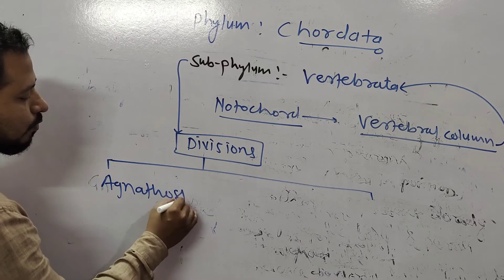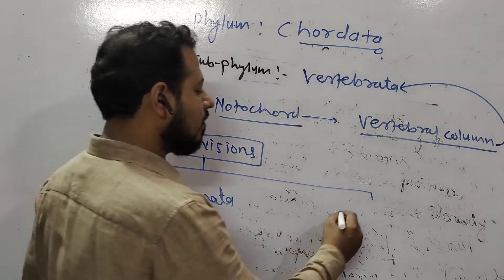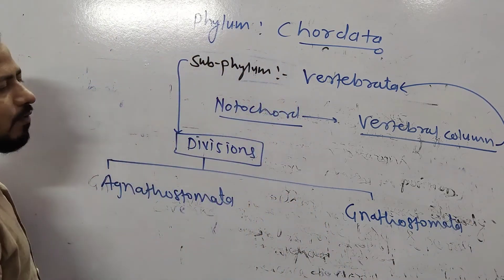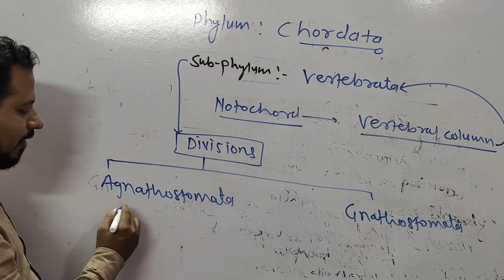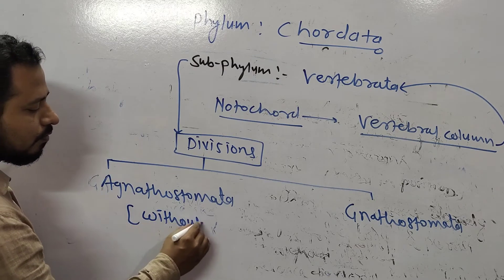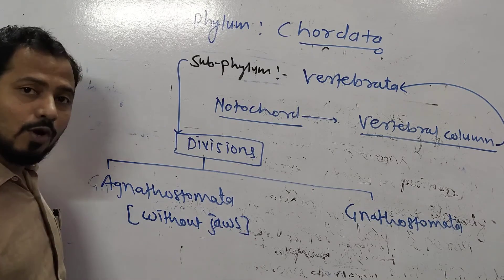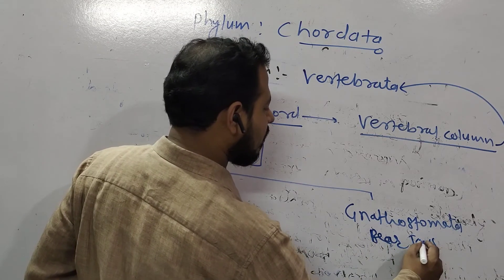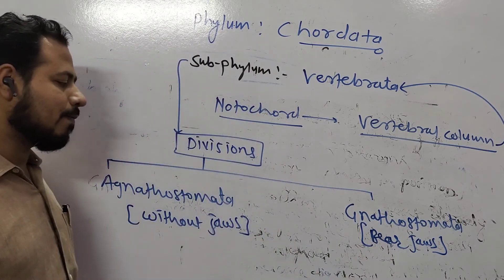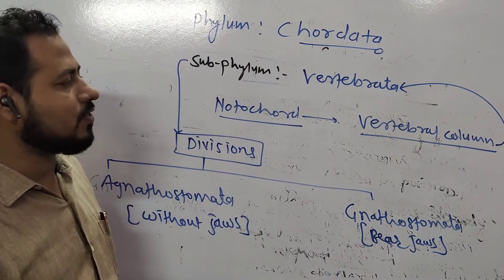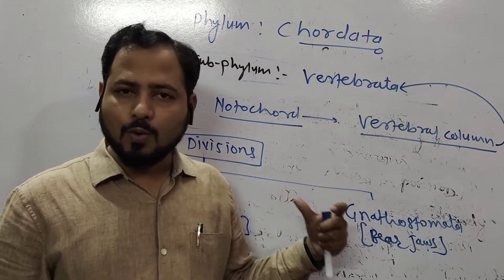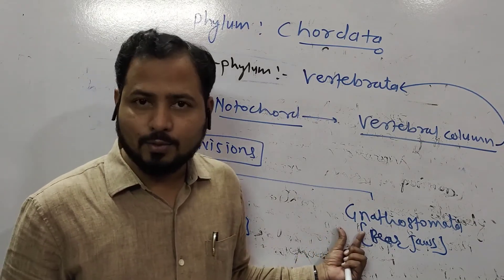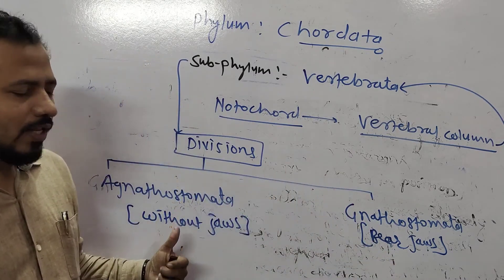The classification of subphylum Vertebrata includes two divisions: Agnatha and Gnathostomata. Agnatha means without jaws — these animals do not bear jaws. Gnathostomata means jaw-bearing — these animals bear jaws. So vertebrates are classified into jaw-less and jaw-bearing groups.